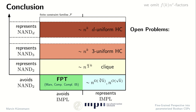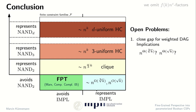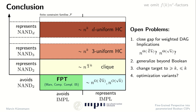The open problems: the most pressing is of course to close the gap for the weighted DAG implications problem — is the lower bound or the upper bound the true answer? If we could resolve this question, we would resolve it for the whole regime. It would also be interesting to generalize this classification beyond the Boolean domain to larger constant-size domains. Also interesting variants would be to change the target to finding a solution of at least weight K or at most weight K, and there are many optimization variants that might be interesting to look at.